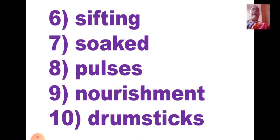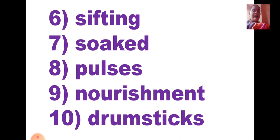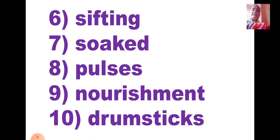Sixth one is S-I-F-T-I-N-G. Sifting means when you sift a whole flour — like Atta — that is called sifting. Whenever we make chapatis or bhakri, before that we sift that particular flour. Seventh one is S-O-A-K-E-D, Soaked. Soaked means to keep some food items in water. Eighth one is P-U-L-S-E-S, Pulses. There are various pulses — dals and grains — those are called pulses.